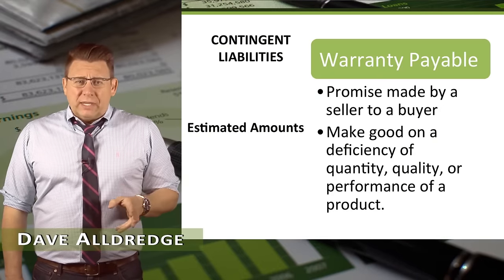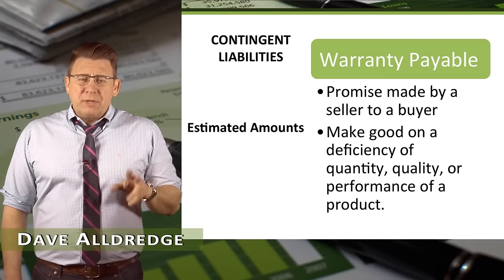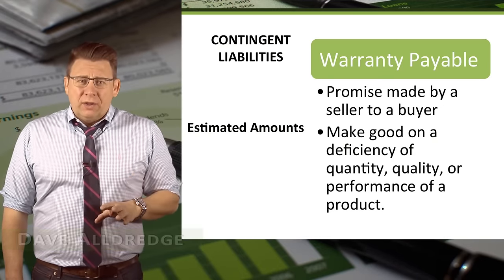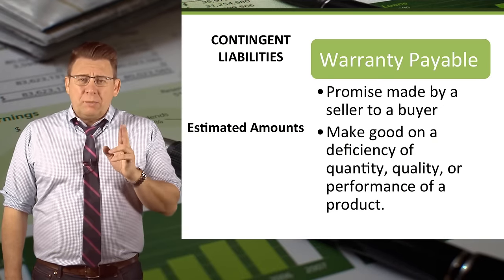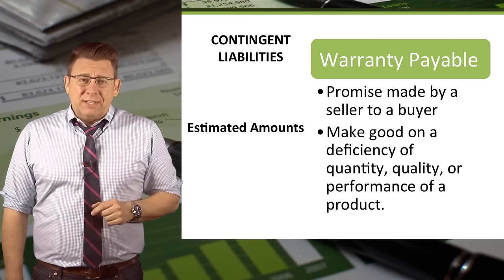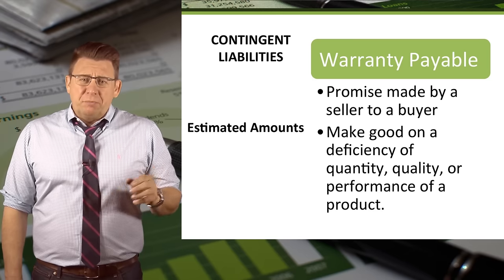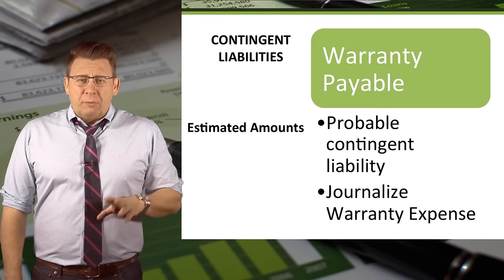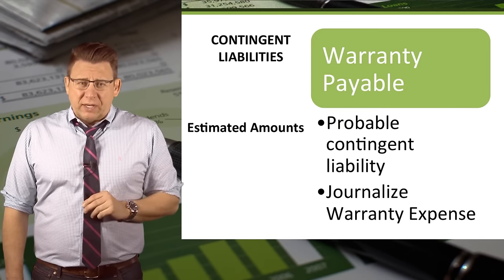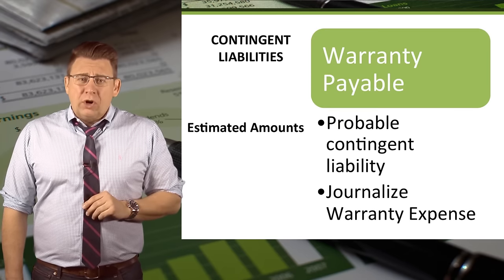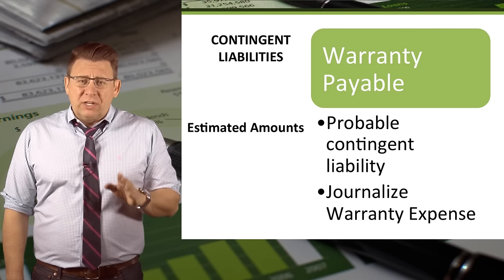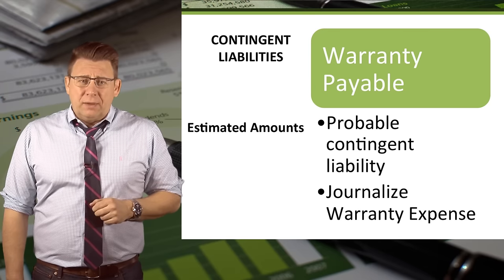A product warranty is a promise made by a seller to a buyer to warrant a product against defect for some period of time. From an accounting perspective, a warranty is an example of a probable contingent liability.